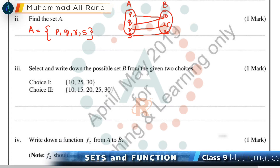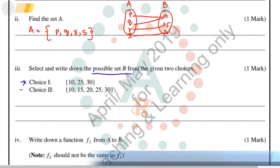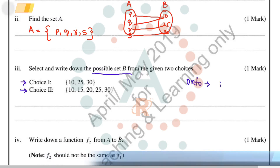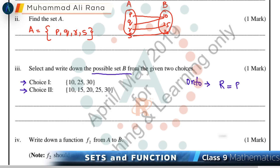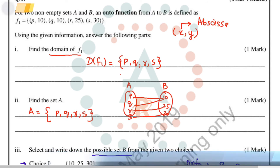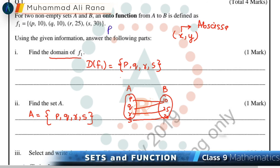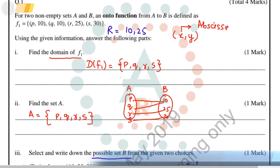For Part 3, we have to select and write down the possible Set B from two given choices. We know the function is onto, and for an onto function the range must always be equal to Set B. Looking at the function — (p, 10), (q, 10), (r, 25), (s, 30) — the range is {10, 25, 30}.